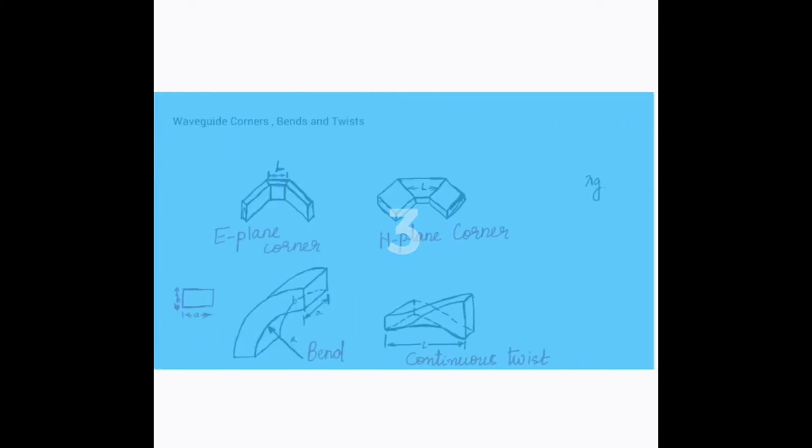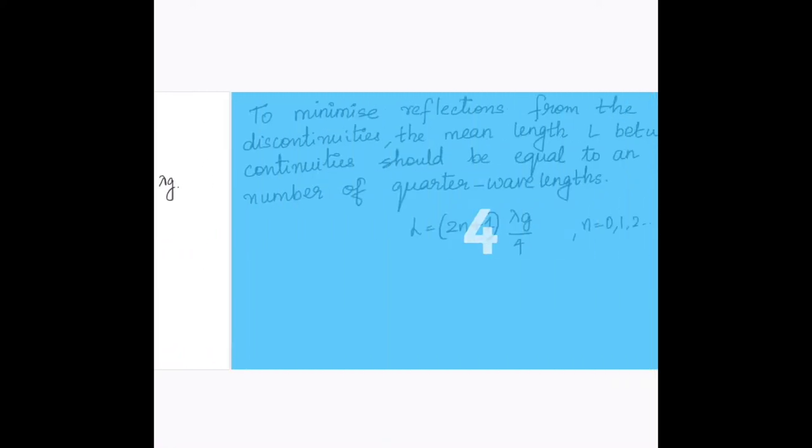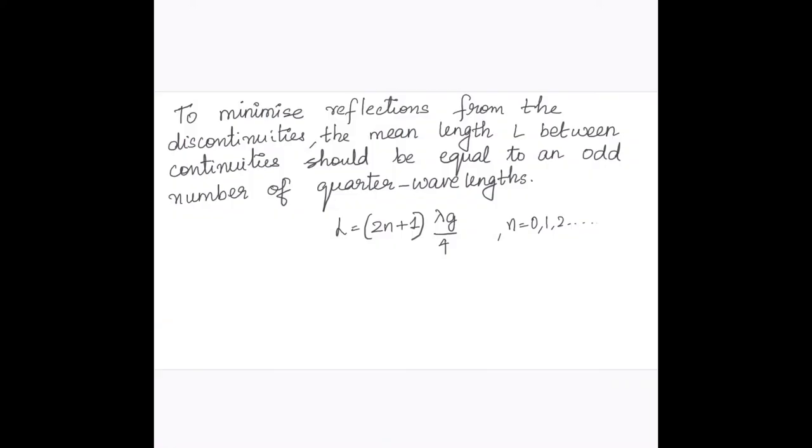Similarly, for the waveguide bend, here this is denoted as R. So there is a design value to be followed. The minimum radius of curvature for small reflection is given by: